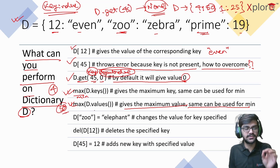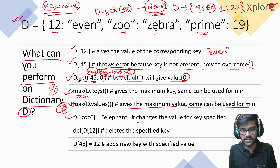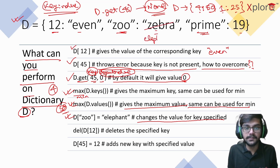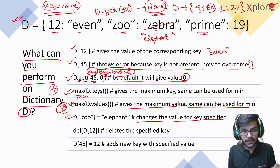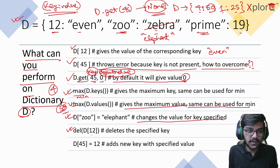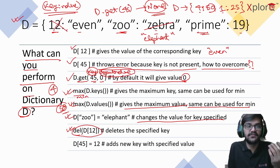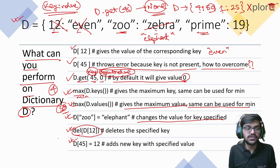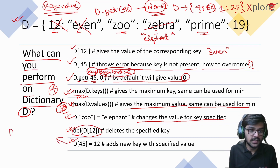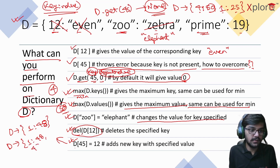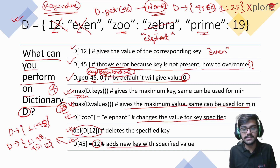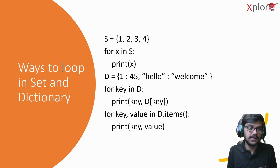To change a value, use d['zoo'] = 'elephant', which replaces 'zebra' with 'elephant' for that key. To delete a key-value pair, use del d[12] — this removes the key 12 and its value. To add a new key-value pair, simply assign it: d[45] = 12 adds key 45 with value 12 to the dictionary.